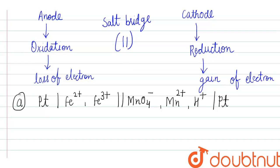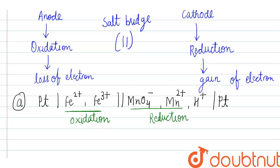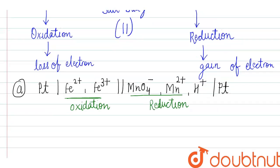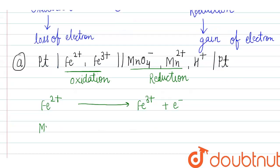For our first cell reaction, the left side is oxidation and the right side is reduction. Checking the oxidation state: Fe2+ is converted to Fe3+ plus electrons — this is loss of electrons, so this is oxidation. Now we check MnO4 minus.